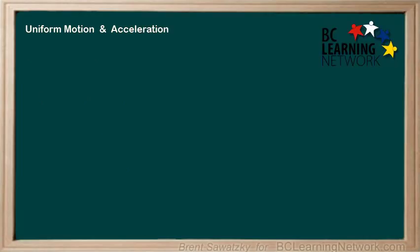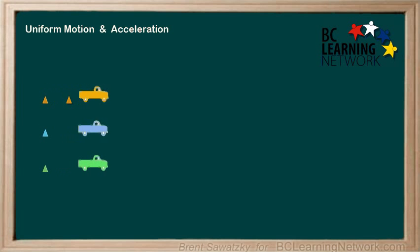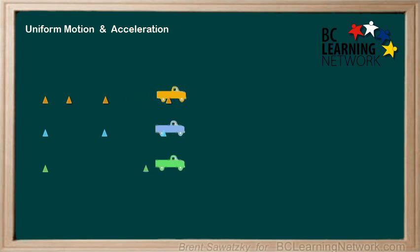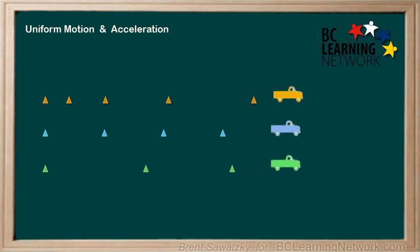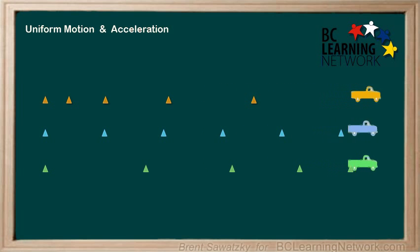So let's run those trucks again, but this time things will look a little different. We can notice that the pylon spacing for both the orange and the green trucks is no longer uniform — their velocity is changing. This is not uniform motion. The change in distance over each second is increasing for the orange truck, and therefore its velocity is increasing. It's accelerating.